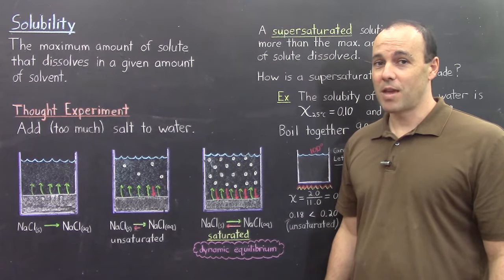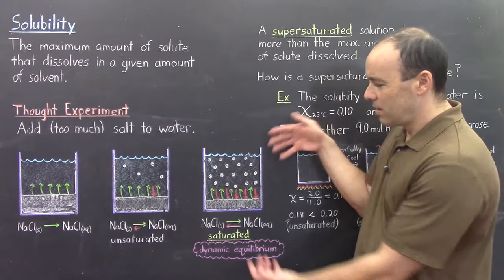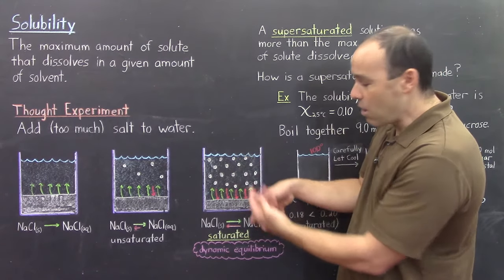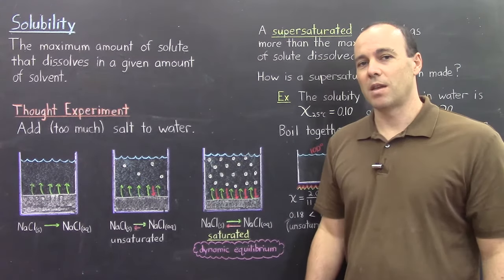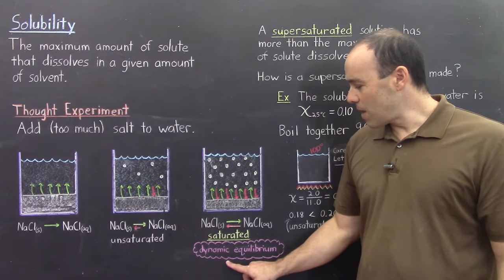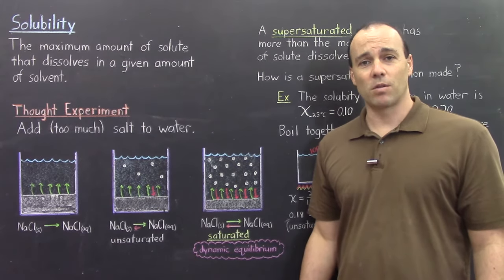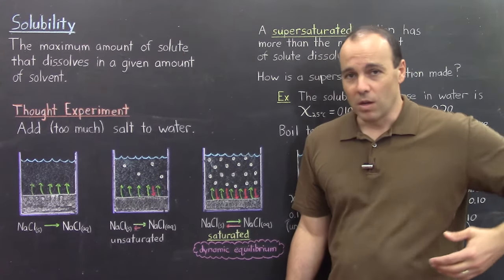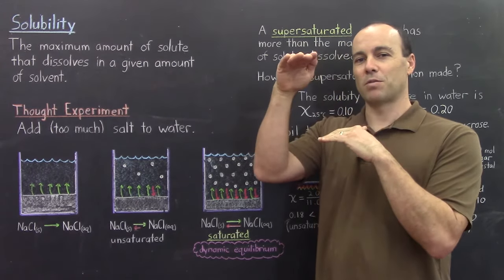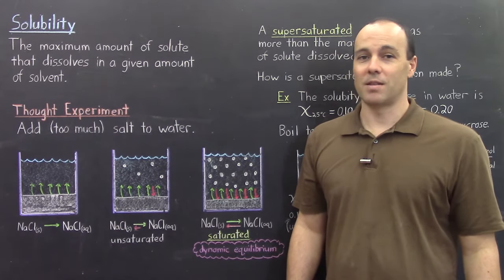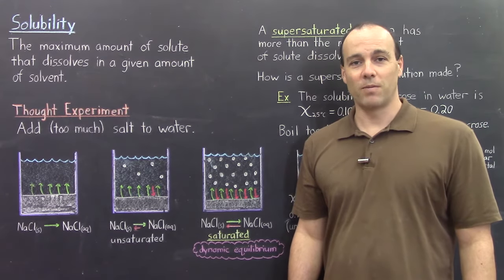This is also another case of dynamic equilibrium — dynamic meaning that there is still dissolving and recrystallizing occurring, however it's an equilibrium situation because the concentration from this point forward would remain the same. You can probably recall another case of dynamic equilibrium: several lectures back we saw that vapor pressure is also a case of dynamic equilibrium, in which liquid vaporizes and recondenses at equal and opposite rates, and so the vapor pressure above the solution remains relatively constant.